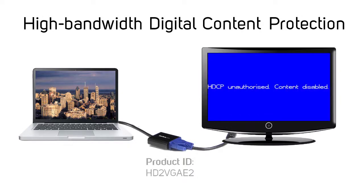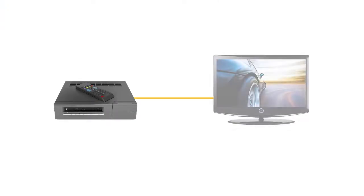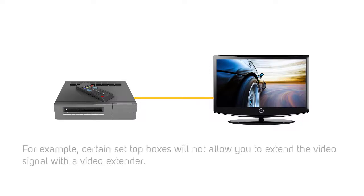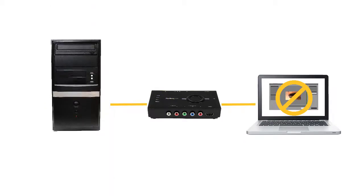An example of this would be converting from HDMI to VGA. Certain video sources require a direct connection from the source to the display. For example, certain set-top boxes will not allow you to extend the video signal with a video extender. If you are unsure if your video source is HDCP protected, try another source, such as the output from a laptop or computer.